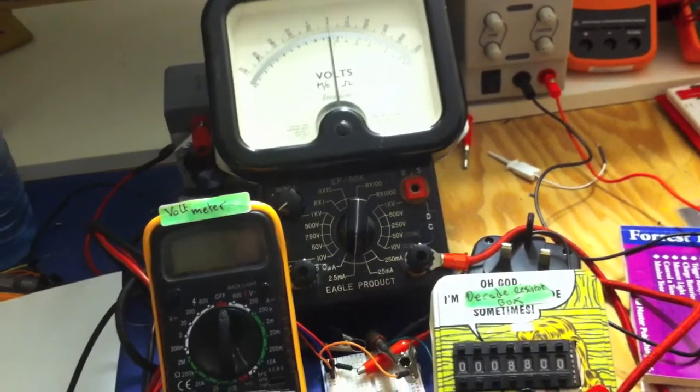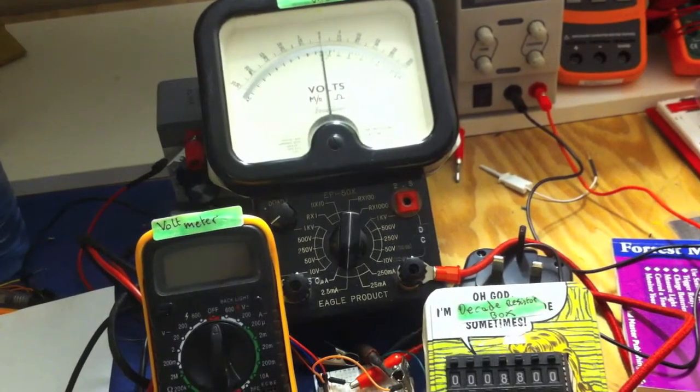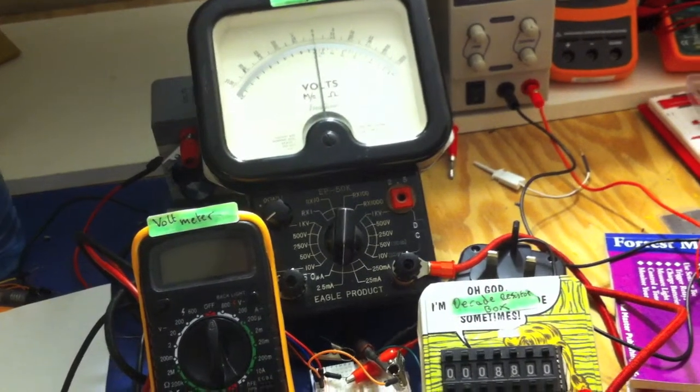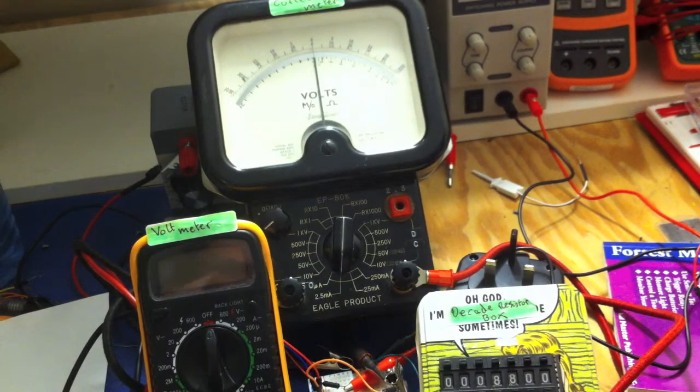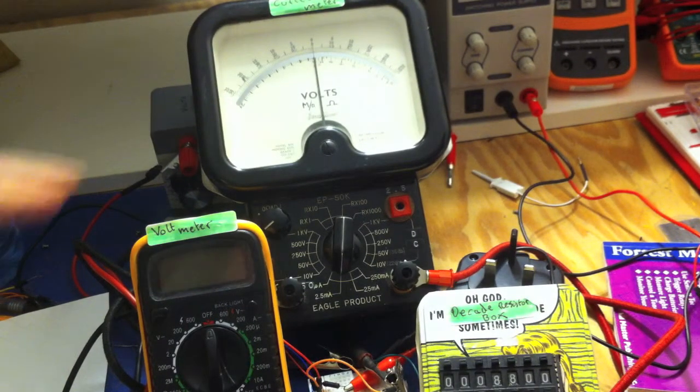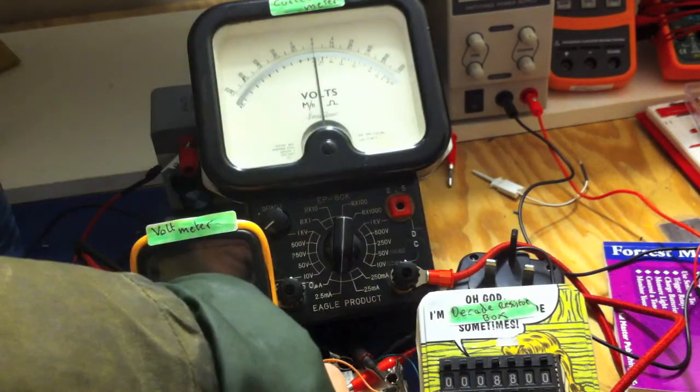Go back so we can see all of them. Set this up so we can see all three. The decade box, you've seen the circuit connected, the voltmeter there on the left, the current meter which, although it's saying volts there, and the decade box.